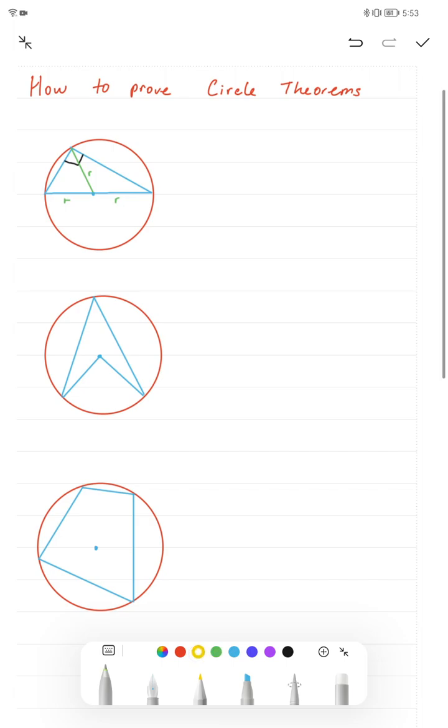And what we actually have are two isosceles triangles. If I call this angle A and call this angle B, as it's an isosceles triangle, this will also be angle A and this will also be angle B. And from our knowledge in triangles, we know that all the angles must add up to 180 degrees.